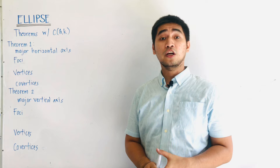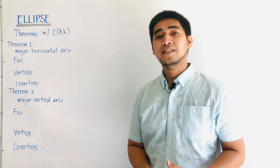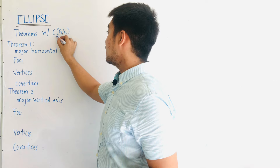So today, we will discuss the standard equation of an ellipse if the center is now located at (h, k). We have two theorems.